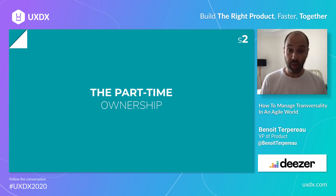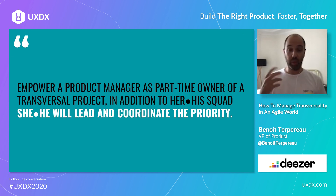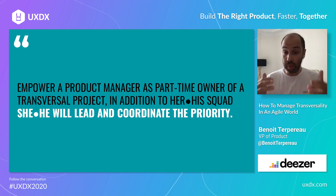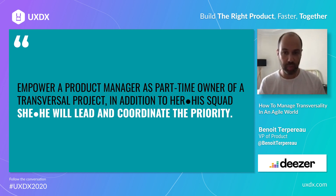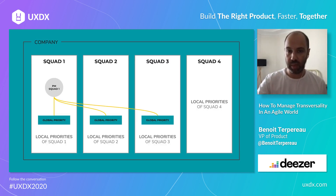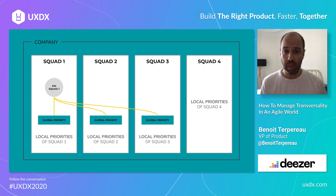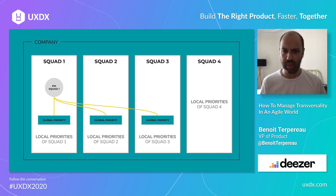The second solution is called part-time ownership. What you do here is empower a product manager as a part-time owner of this global priority — this transversal project — in addition to their regular squad work. They will lead and coordinate the priority. So this PM, on top of their normal PM role and squad responsibilities, will do the discovery for the priority, push it across other teams, and report to you on progress. Coming back to the diagram: the PM of squad 1 is the leader of the priority, enforcing it in squads 1, 2, and 3, and managing the scrum of scrum board if you have one. They make sure dependencies are treated in priority, solve issues if any.